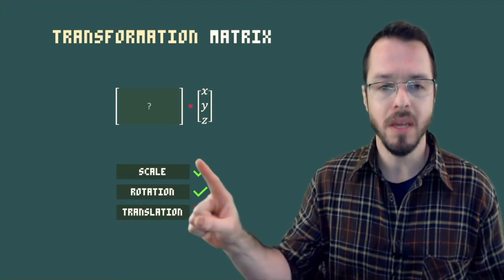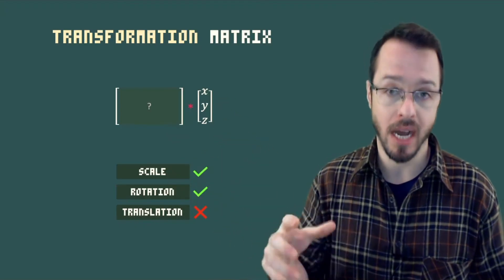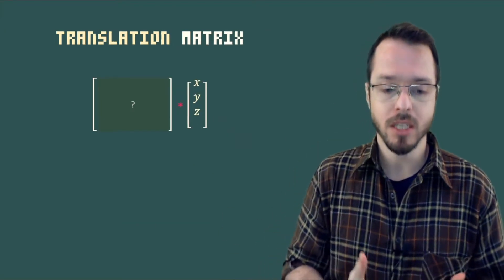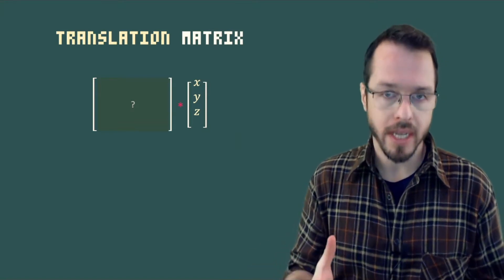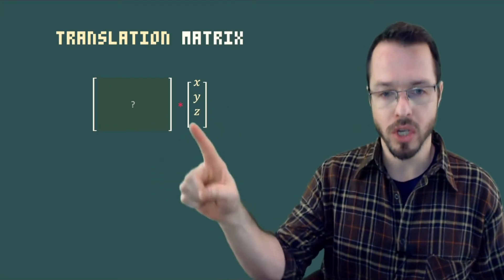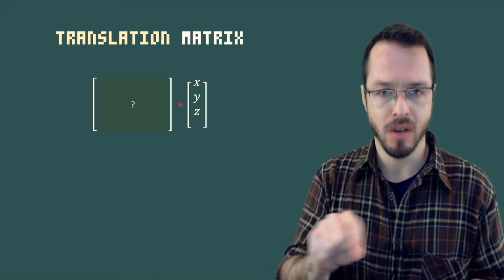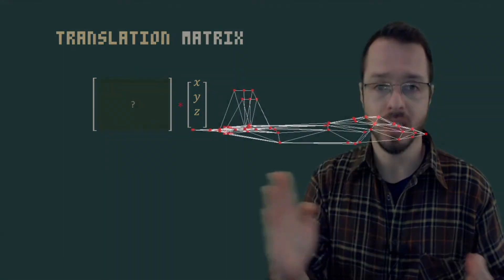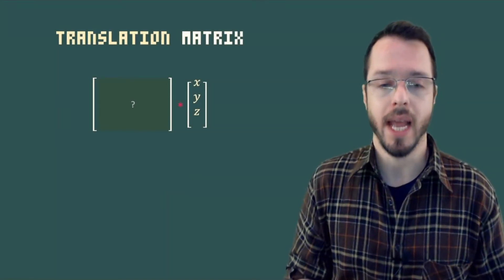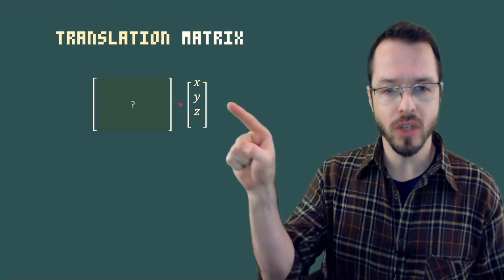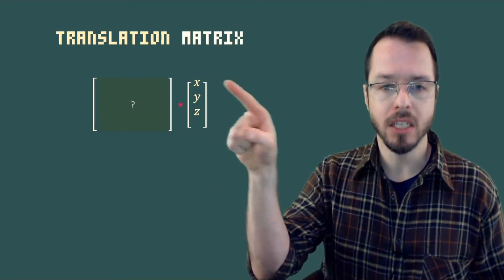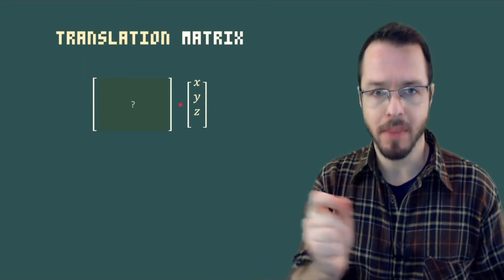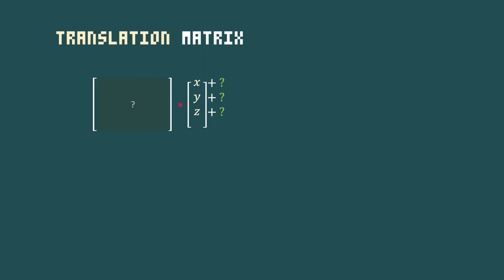Let's look mathematically at what it means to multiply a matrix and translate x, y, and z. We want to take our original vector x, y, z and translate it by some amount in x, some amount in y, and some amount in z. For us to translate something, we want to add something to x, add something to y, and add something to z — that is what translation means. I want to get those values and offset them by a certain amount.